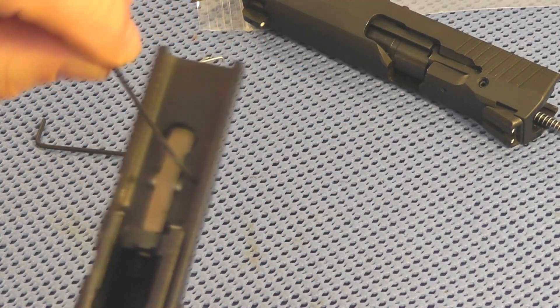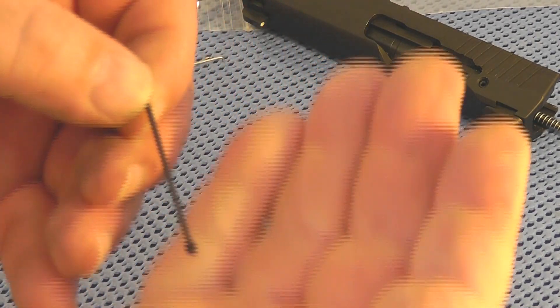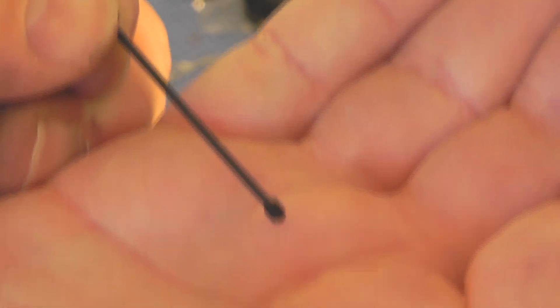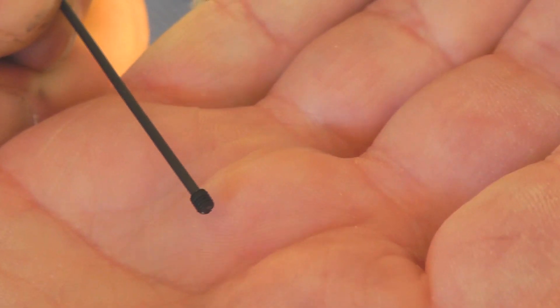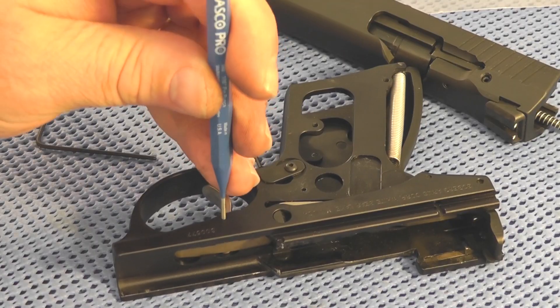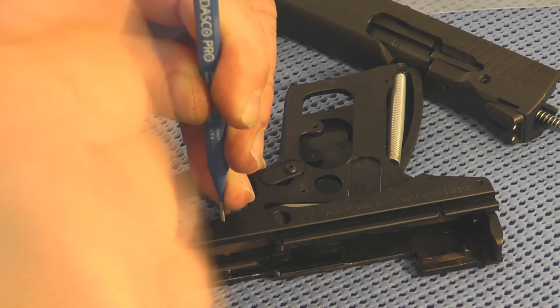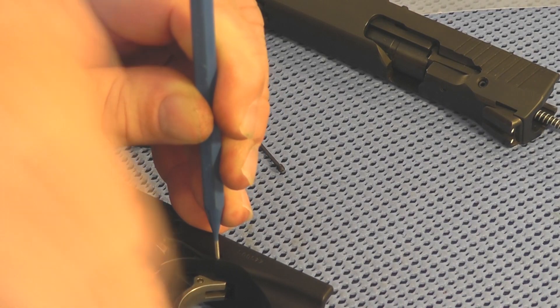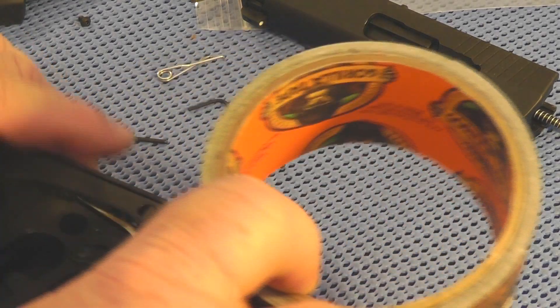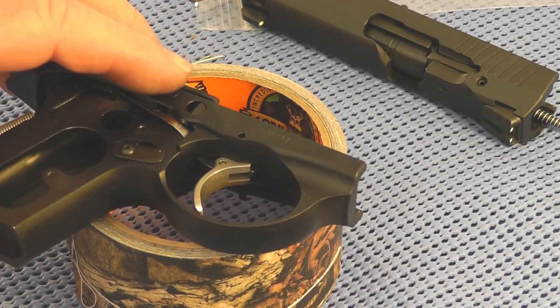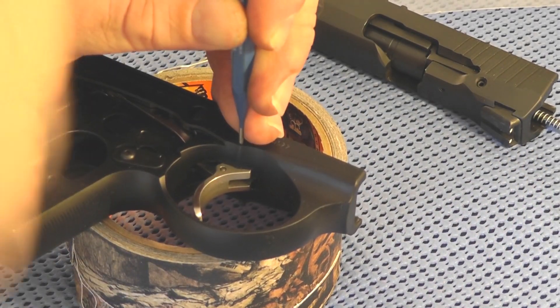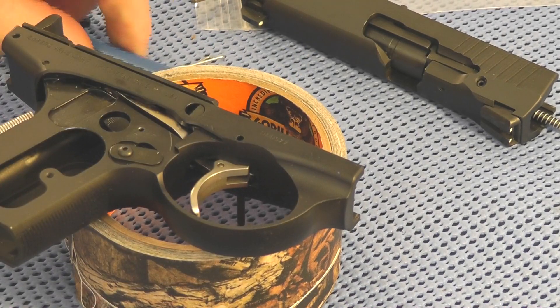It's at a slight angle too, so it's pretty small. Don't lose it. Now you just need to knock out the pin that the trigger pivots on. Old faithful gorilla tape there to save the day.